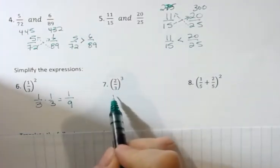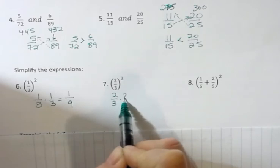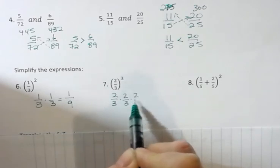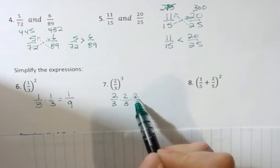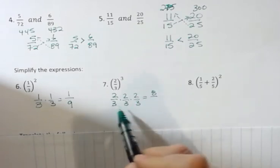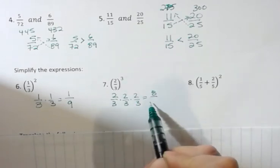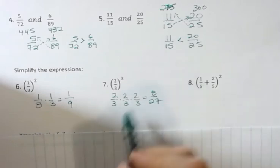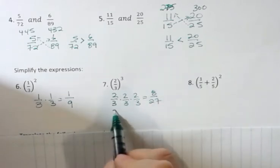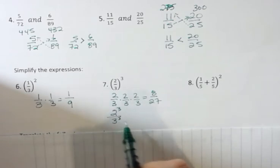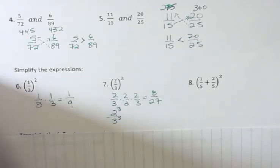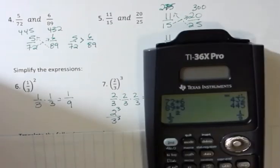What about two-thirds to the third power? It looks like this, two-thirds times two-thirds times two-thirds. Two times two times two is eight, and three times three times three is 27. Here's another way to think about that. This also could be thought of as two to the third power over three to the third power. I'm multiplying two to the third power, and I'm multiplying three to the third power. What is two to the third power?